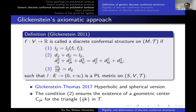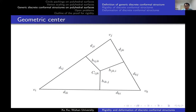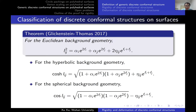Glickenstein and his student Thomas further introduced the hyperbolic and spherical versions. The formula for L_ij can be written as a quadratic form with coefficients α_i, α_j, and η_ij, where α_i, α_j, and η_ij are constants. They also obtain the hyperbolic and spherical background versions. Note that we can shift the discrete conformal structure F to make the coefficient α_i be −1, 0, or 1. Remarkably, this formula coincides with the 18 different types of discrete conformal structures constructed by Zhang-Guo-Zheng-Luo-Yao-Gu, showing that both approaches define the same discrete conformal structure.